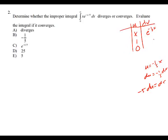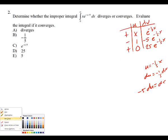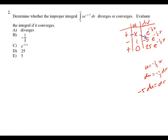I should have rewritten it as a limit first. So: the limit as B approaches infinity from 0 to B of x times e to the negative x over 5, DX. Then I integrate using the tabular result: the limit as B approaches infinity of negative 5x times e to the negative one-fifth x minus 25 times e to the negative one-fifth x, from 0 to B.